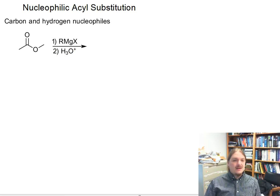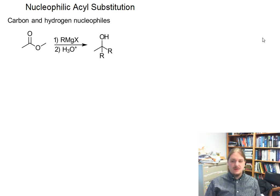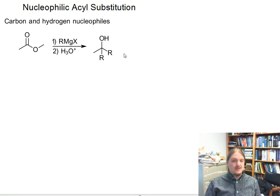You recognize that these reactions form tertiary alcohols where two of the alkyl groups on that alcohol come from the Grignard reagent.